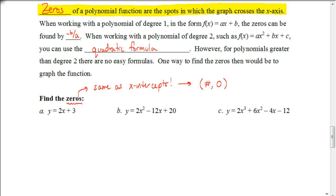And remember that from the first video for this section, the x-intercepts are found when y is 0 and x is some number. When working with a polynomial of degree 1, in the form ax + b, the zeros can be found by taking the opposite of b divided by a. When working with a polynomial of degree 2, such as ax² + bx + c, you can use the quadratic formula. However, for polynomials greater than degree 2 there are no easy formulas. One way to find the zeros then would be to graph the function. So we'll look at how to do that at the end of this video.